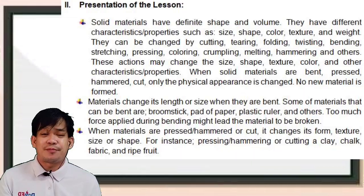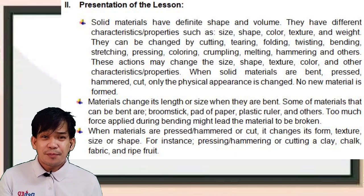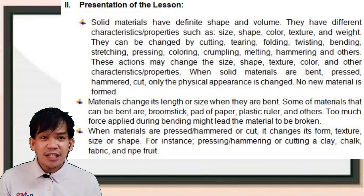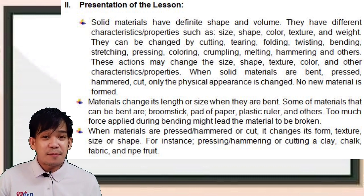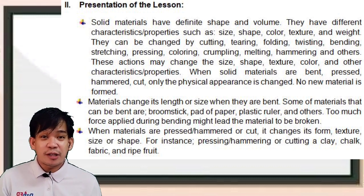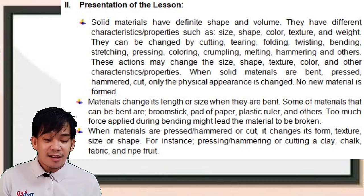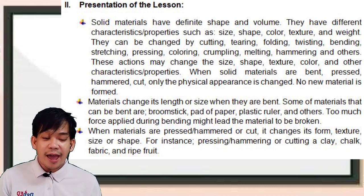So let us first have our discussion. Solid materials have definite shape and volume. They have different characteristics or properties such as size, shape, color, texture, and weight.